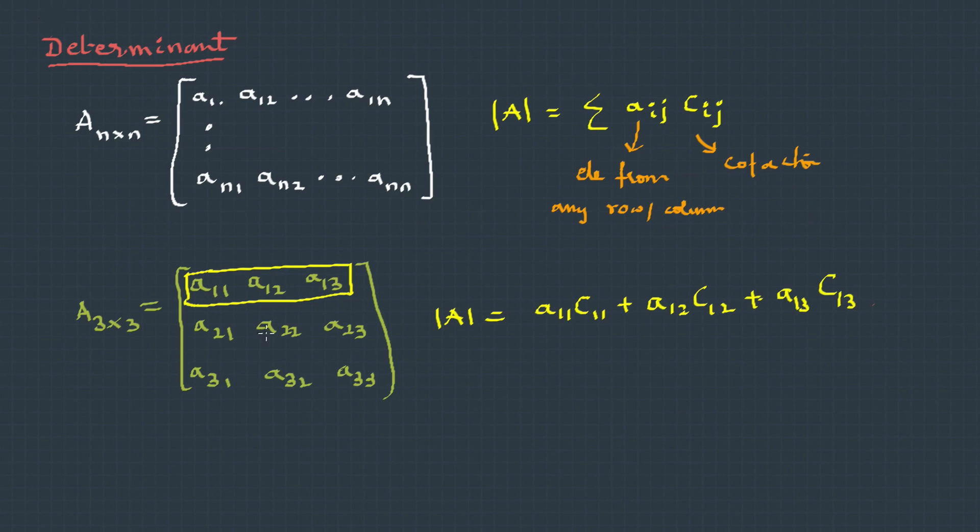So if I take this particular column, we can find the determinant as a12·C12 and so on.